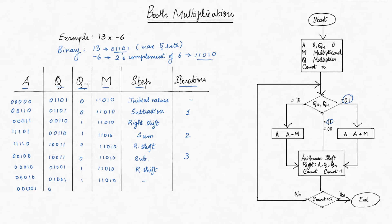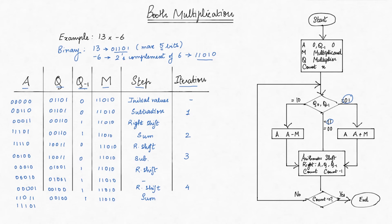We have now completed 4 iterations of the algorithm. Here, as the highlighted pattern is 0,1, we perform the addition operation as per the algorithm — A plus M — and set the result value in register A. Next, we perform a right shift through A, Q, and Q-1 as usual.